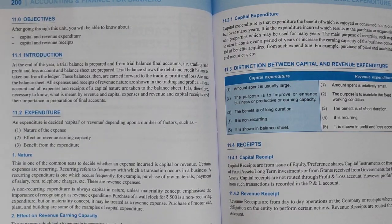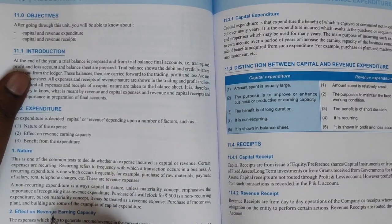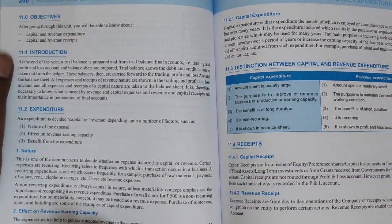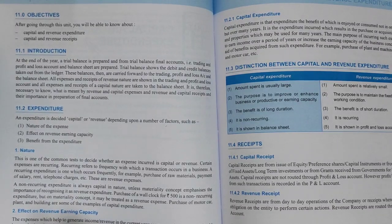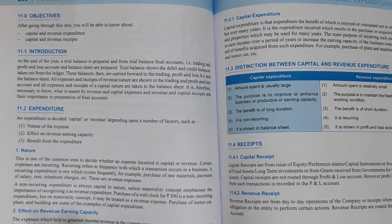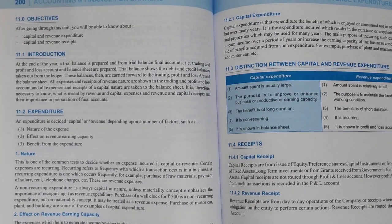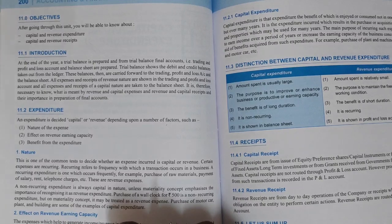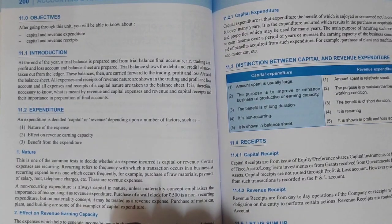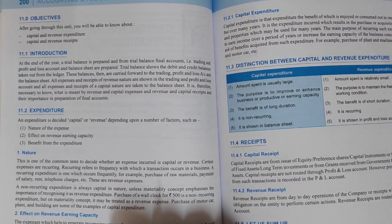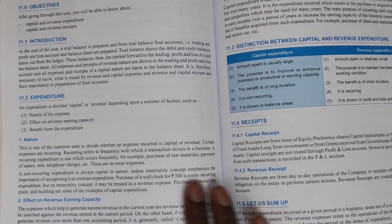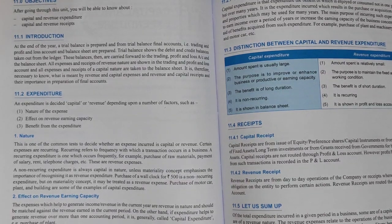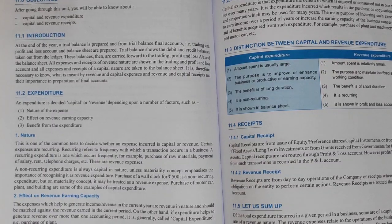If you are doing this expenditure, it will benefit for a long time. For example, if you install a machine, you can use the machine for 5 or 10 years — that is capital expenditure. Small sale, transportation cost, machine repair — those change yearly — that is revenue expenditure. Long-term benefit is capital expenditure; short-term benefit is revenue expenditure.